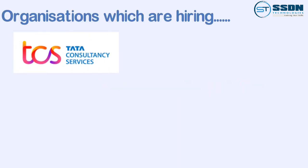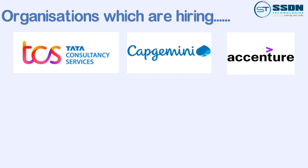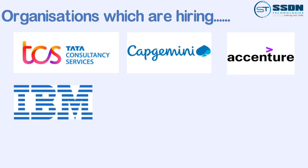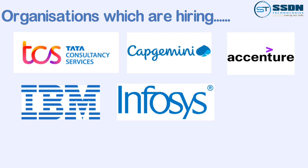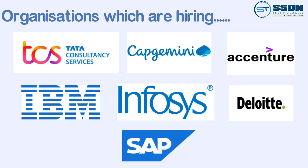TCS offers an average package of 6 lakh per annum. Capgemini offers 6 lakh 74 thousand. Accenture offers 7.34 lakh per annum. IBM offers 7.35 lakh per annum. Infosys offers 8.5 lakh per annum. Deloitte offers 10.61 lakh per annum. And SAP itself offers an average package of 13.34 lakh per annum.